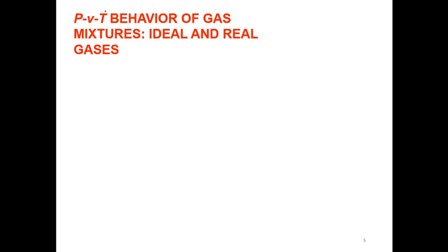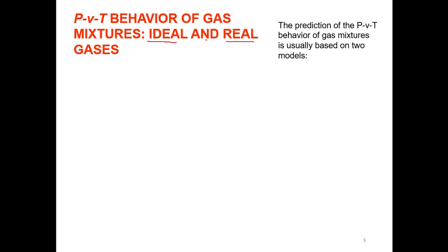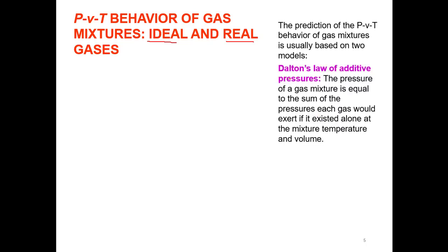The next objective is to get the pressure, volume, and temperature of a mixture, which can be treated as either an ideal or a real gas mixture. Two important laws govern PVT behavior of gas mixtures: the first is Dalton's law of additive pressure, which states that the pressure of a mixture is the sum of the pressures of individual components, provided they exist at the same temperature and volume.